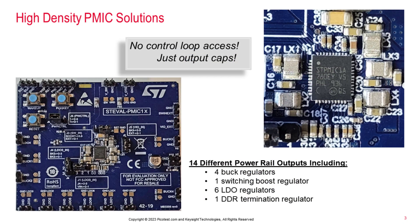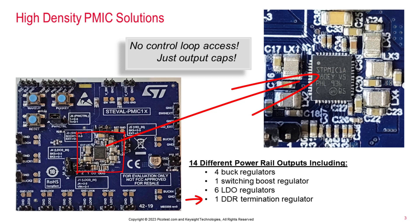In many modern applications, power management ICs or PMICs are used to generate multiple power rails. This ST Microelectronics demo board is a good example. The PMIC includes 14 power rails: four buck regulators, a switching boost regulator, six LDOs, and a DDR termination regulator. There are two separate challenges to determining the stability of these 14 voltage regulator control loops.